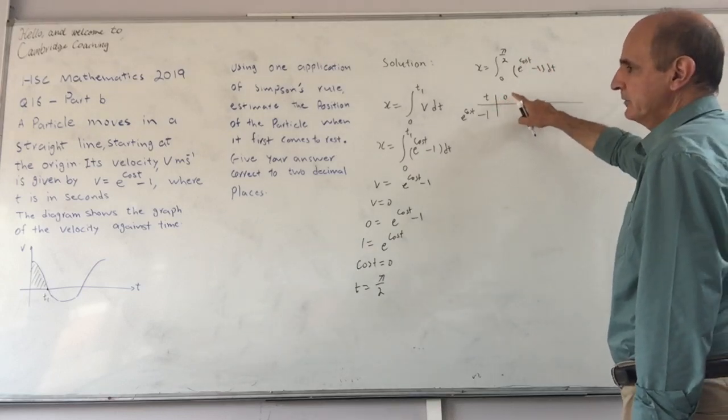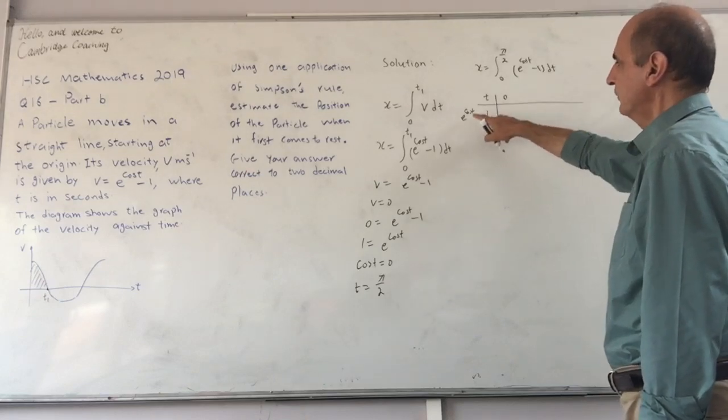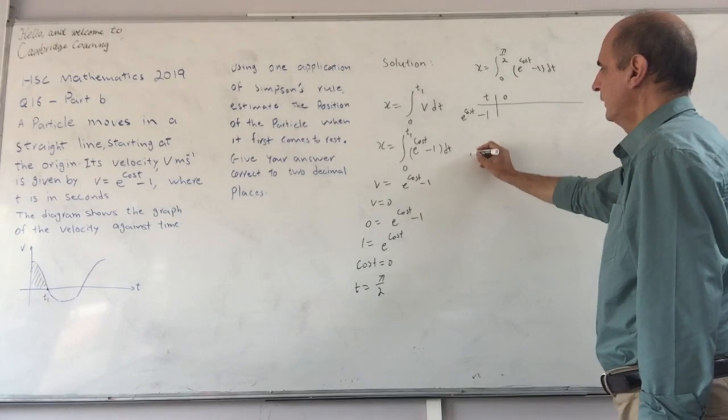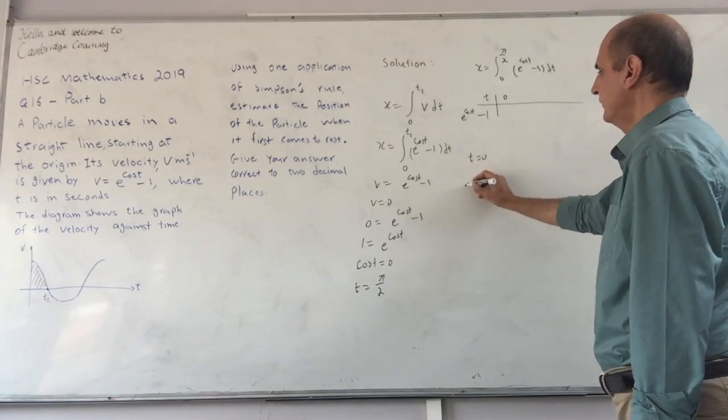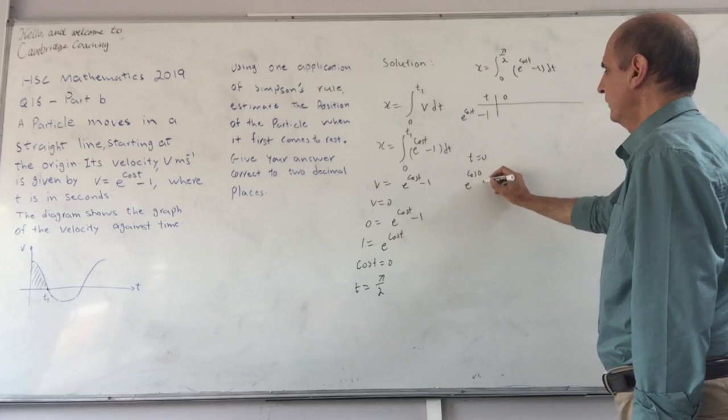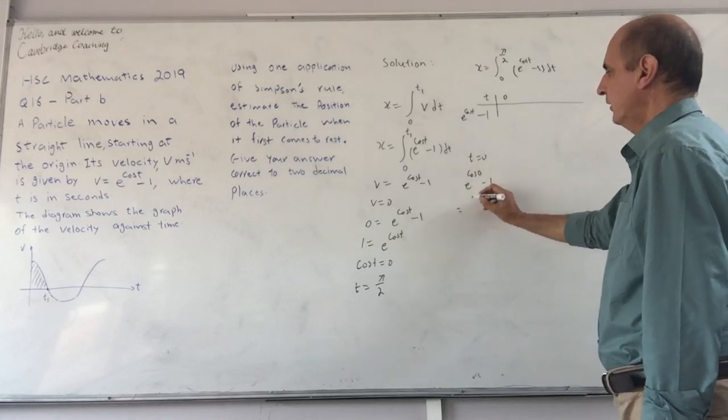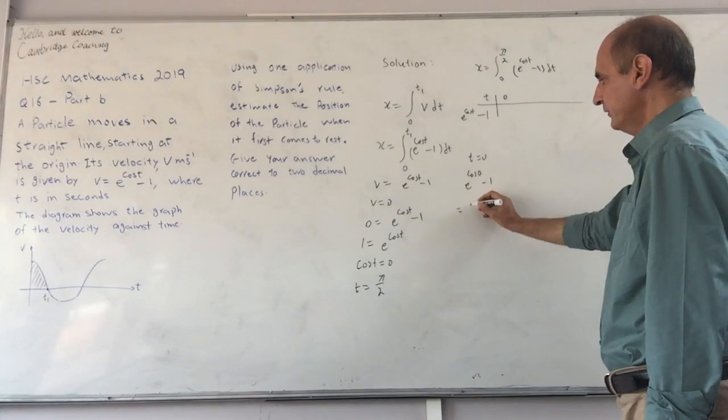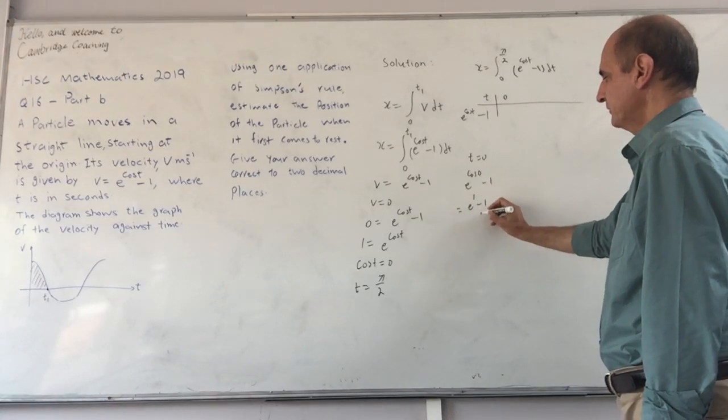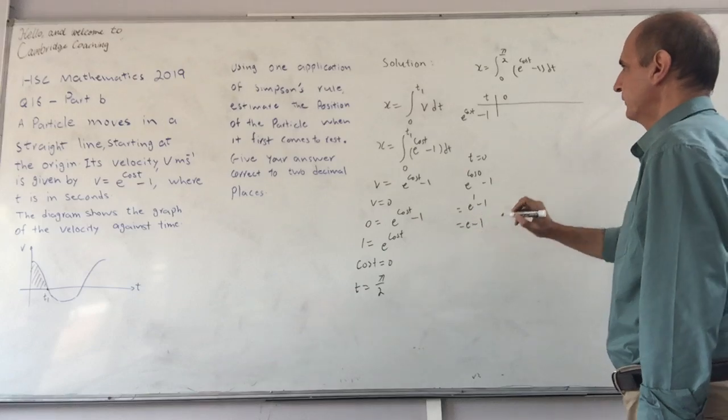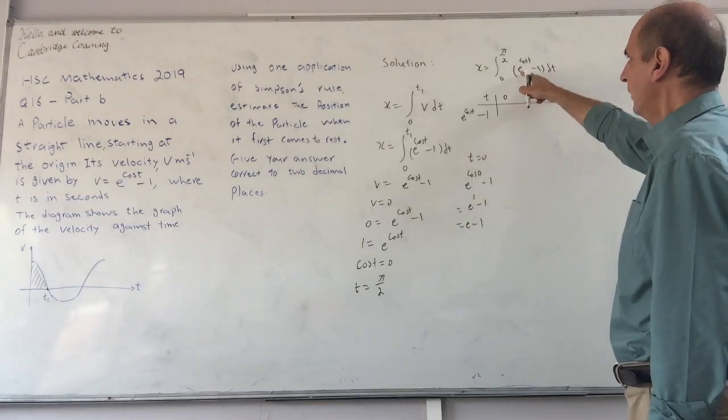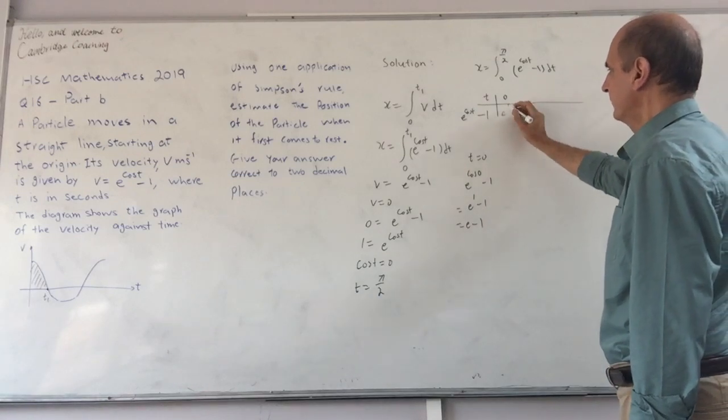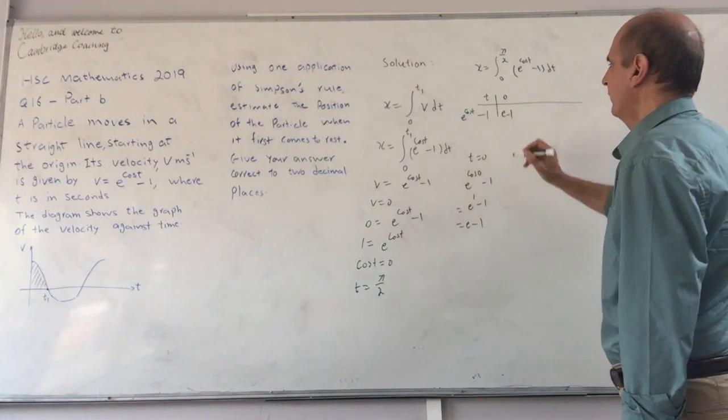So time is 0, and when time is 0, my function is e to the cos of 0 minus 1. Cos of 0 is 1, so that becomes e to the 1 minus 1, which is e minus 1. So when time is 0, my function value is e minus 1.